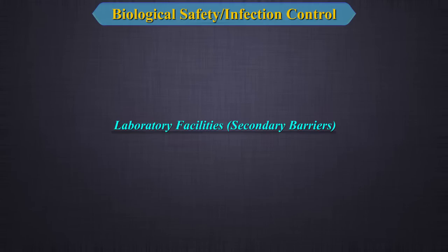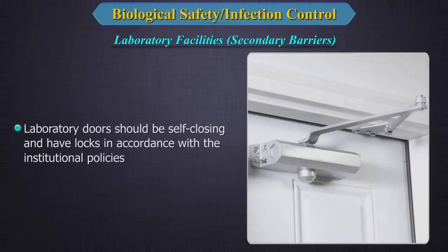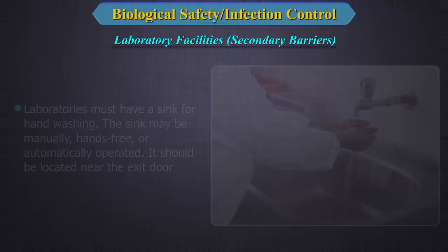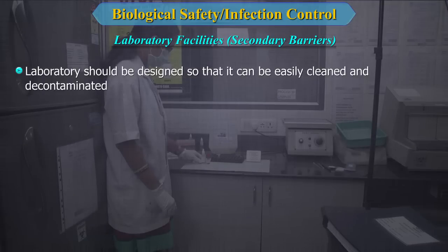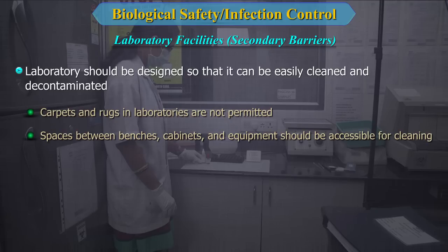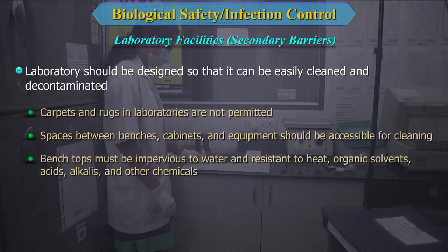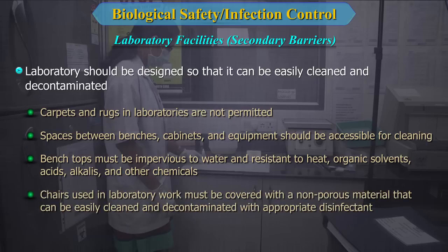Regarding laboratory facilities providing secondary barriers: 1. Laboratory doors should be self-closing and have locks per institutional policies. 2. Laboratories must have a sink for hand washing, which may be manually, hands-free or automatically operated, located near the exit door. 3. The laboratory should be designed for easy cleaning; carpets are not permitted. Bench tops must be impervious to water and resistant to heat, organic solvents, acids, alkalis and chemicals. Chairs must be covered with non-porous, cleanable material. 4. Laboratory infrastructure must support anticipated loads and use.